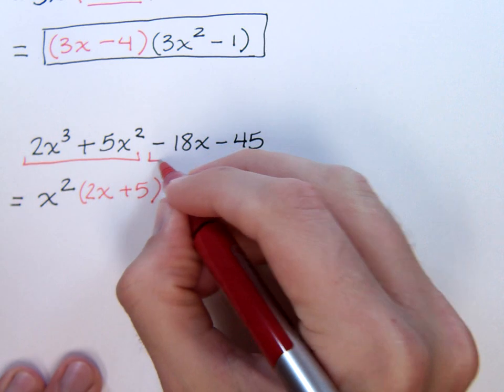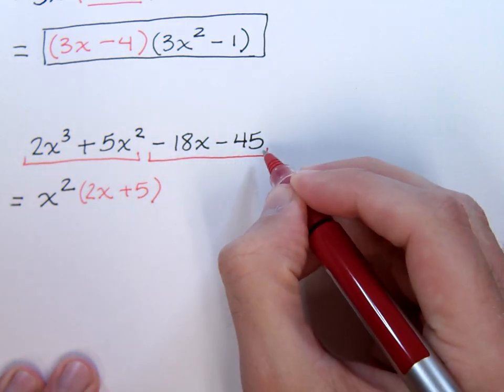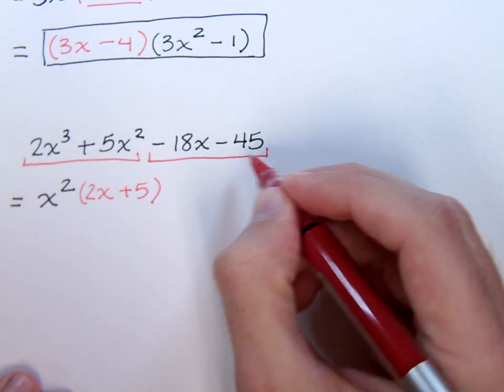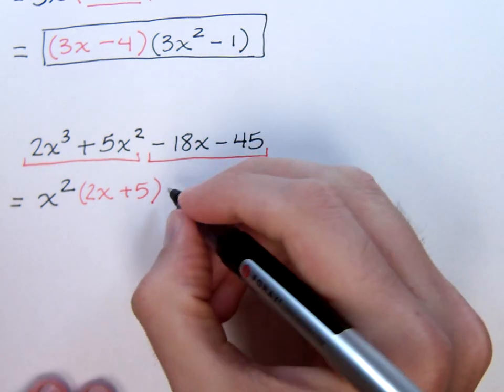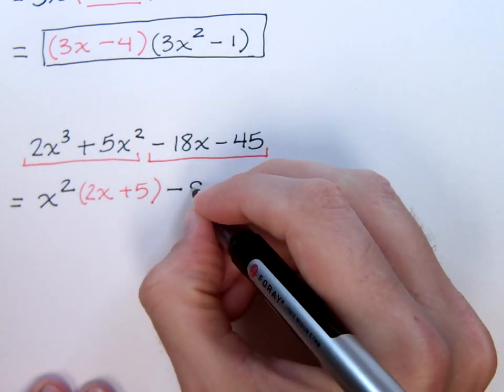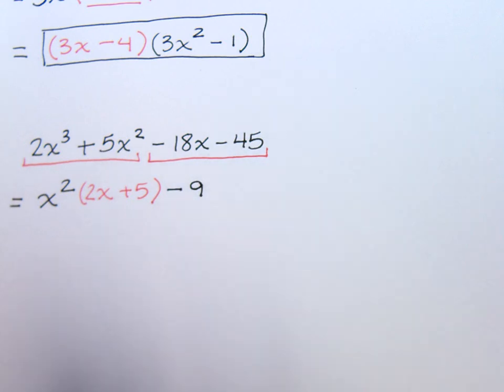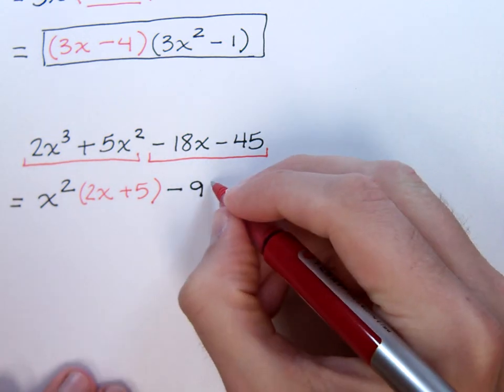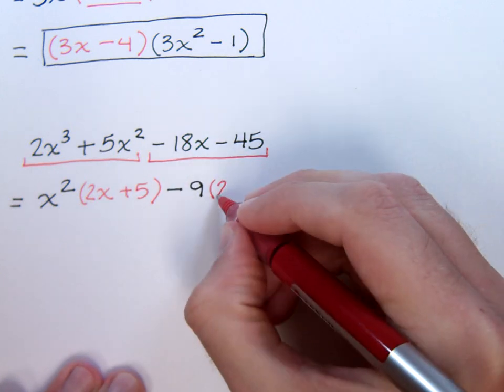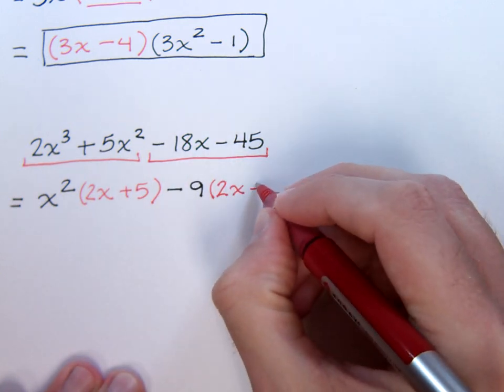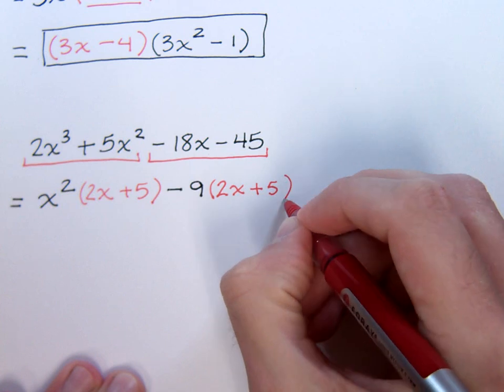In this next group, negative 18x minus 45 is just like what we did in the last problem. You lead up with a negative, so you need to factor out a negative. The common factor here is a nine, so take out a negative nine from both of those. When you factor that out, it's like you're dividing negative nine into both of them. So, you're going to be left with a two x plus five.